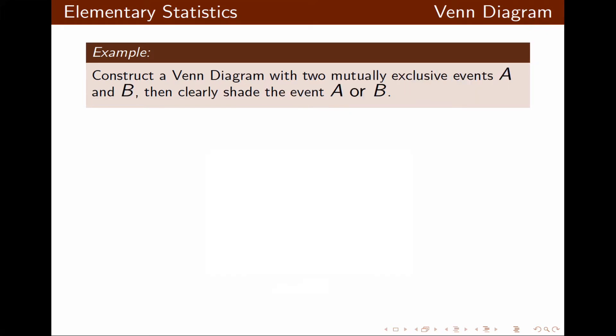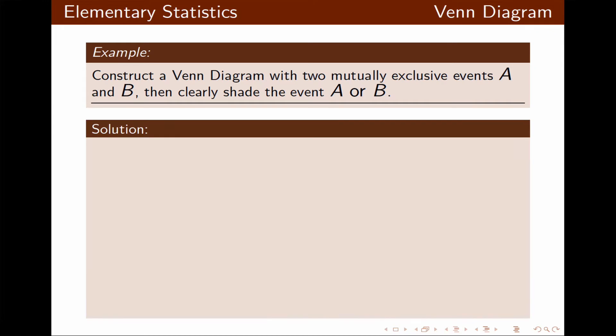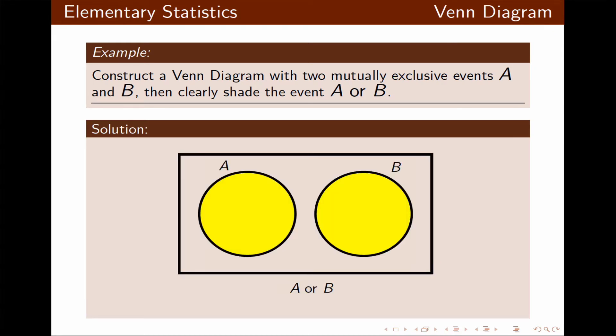Now the problem is to construct a Venn diagram with two mutually exclusive events and clearly shade event A or B. Mutually exclusive events, also called disjoint events, means those circles do not overlap. So I draw the circles such that they are not overlapping, and then I shade both event A and event B for the A or B region.